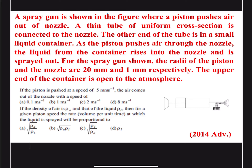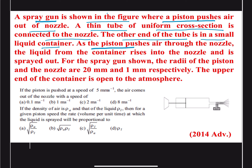Hello friends. Today's question: A spray gun is shown in the figure where a piston pushes air out of the nozzle. A thin tube of uniform cross-section is connected to the nozzle, and the other end of the tube is in a small liquid container. As the piston pushes air through the nozzle, the liquid from the container rises into the nozzle and is sprayed out. The radii of the piston and the nozzle are 20 mm and 1 mm respectively. The upper end of the container is open to atmospheric pressure.